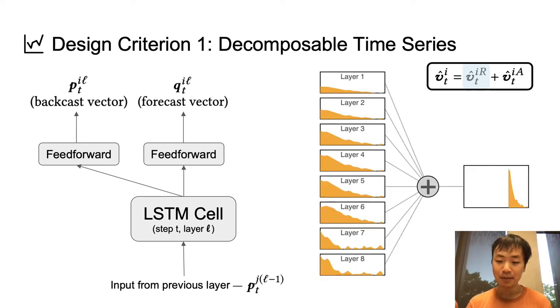Graphically, we can represent the summation of the forecast vectors like this. And in the results section, we will show that the forecast vectors from different layers do indeed capture different trends and seasonality.